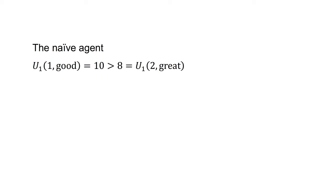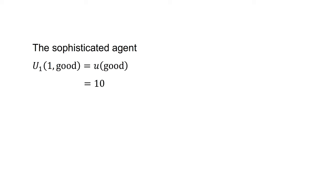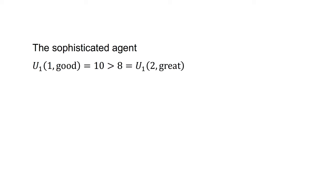What about our sophisticated agent? They make the decision today based on correct beliefs about their future preferences, solving by backward induction. First, what will their decision be next week? The utility of watching the good movie next week from the perspective of next week equals simply utility(good) equals 10. The discounted utility of watching the great movie in week two from the perspective of week one equals beta*delta*utility(great) equals 0.5 times 1 times 16, which equals 8. As the utility of the good movie is greater than the utility of the great movie from the perspective of week one, the sophisticated agent can see that they will choose to watch the good movie immediately.